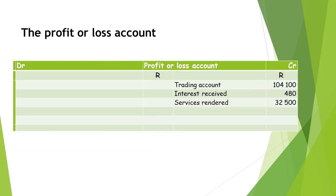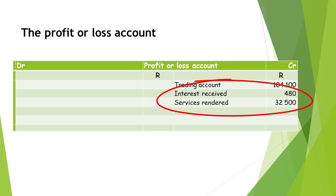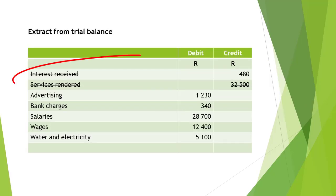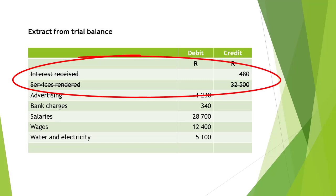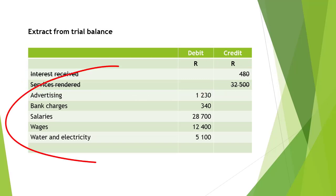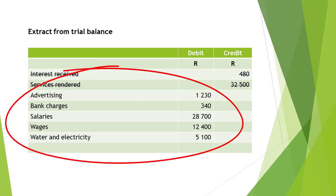The profit or loss account now reflects all the totals of the closed income accounts on the credit side. After closing off all the income accounts, we need to close off all the expense accounts.